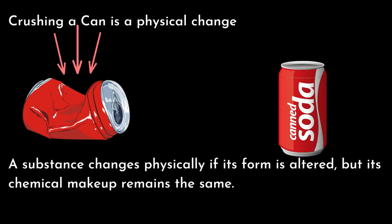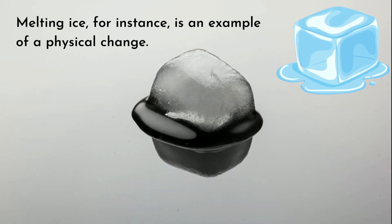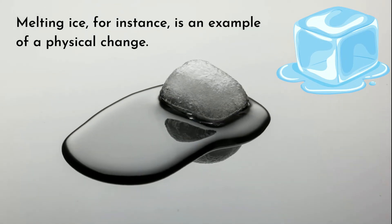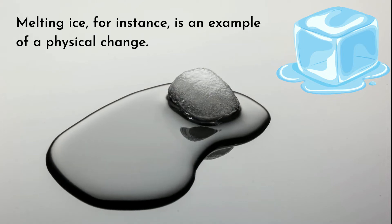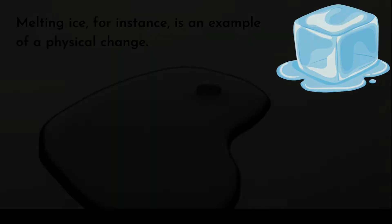A substance changes physically if its form is altered, but its chemical makeup remains the same. Melting ice, for instance, is an example of a physical change. Recall that ice is simply water that froze into a solid in temperatures below 0 degrees Celsius or 32 degrees Fahrenheit.